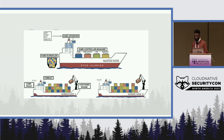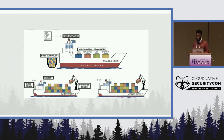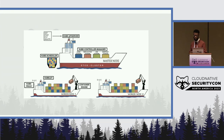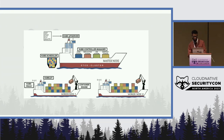You have your worker nodes — the machines that run your containerized applications. They communicate with the master node to receive instructions on what to run and how to run it. Each worker node runs a container runtime such as Docker and Kubelet, and it communicates with the master node to ensure that the desired state of the cluster is always maintained.